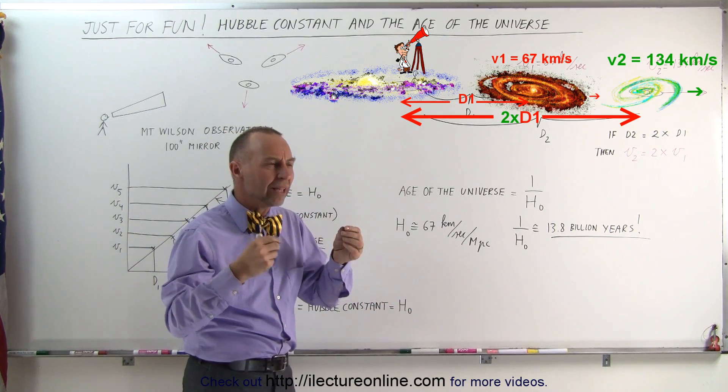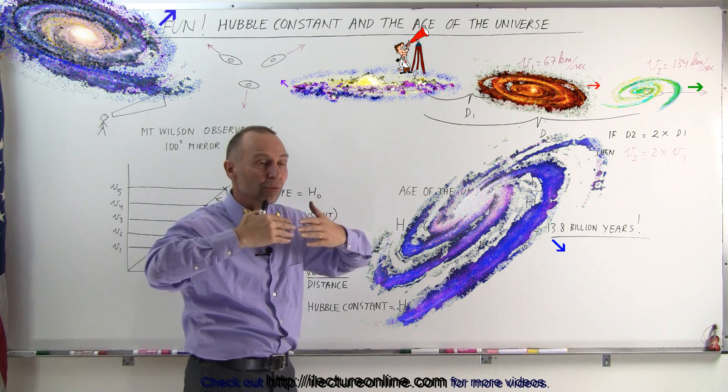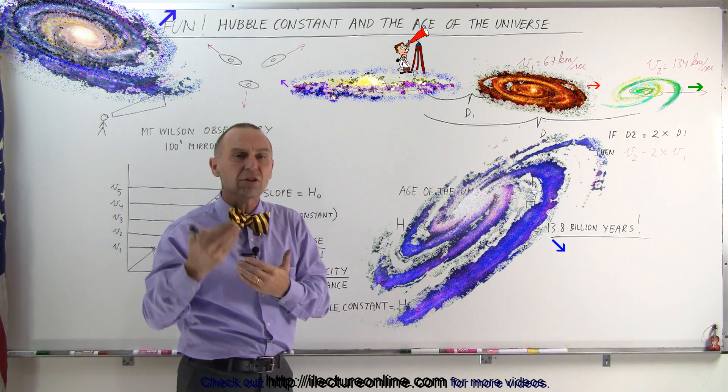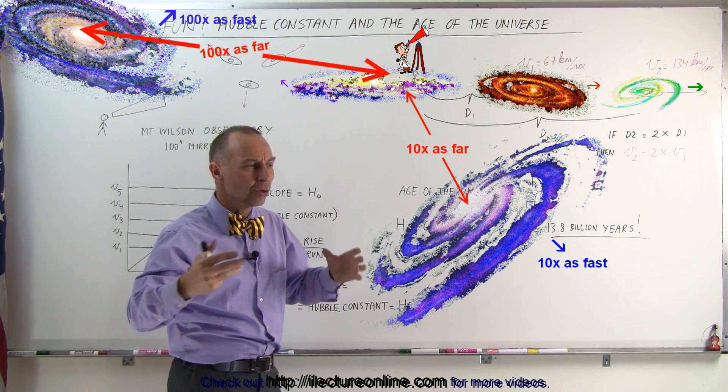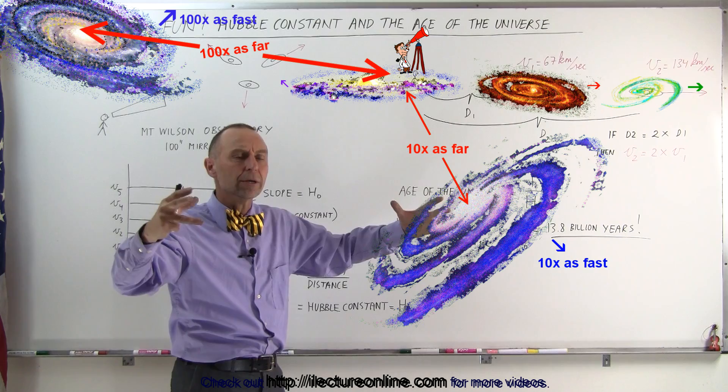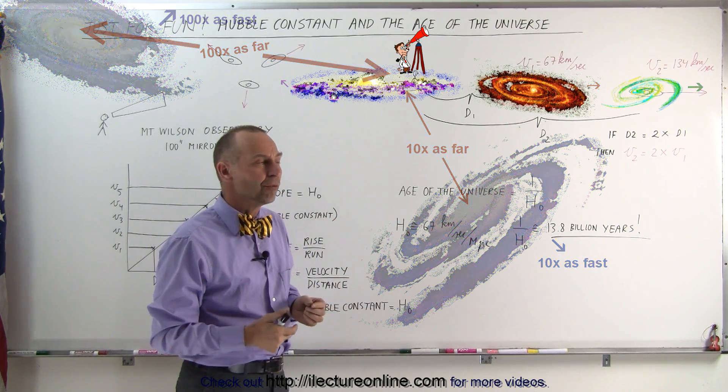So he began to realize that the whole universe is expanding and that galaxies are moving away from us proportional to their distance. 10 times as far, 10 times as fast. 100 times as far, 100 times as fast. The whole universe was moving apart, and the farther they are apart from one another, the faster they're moving.